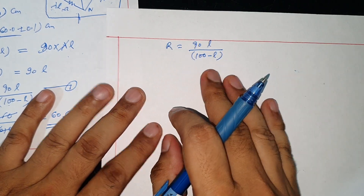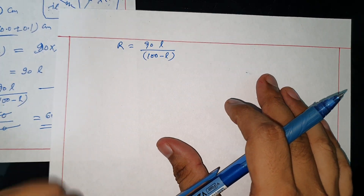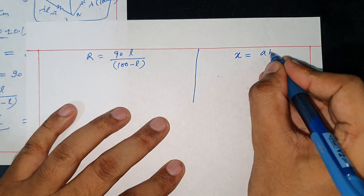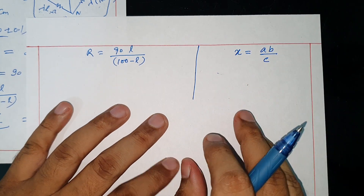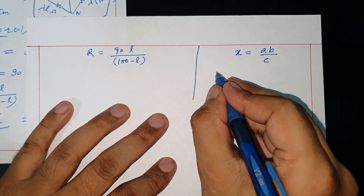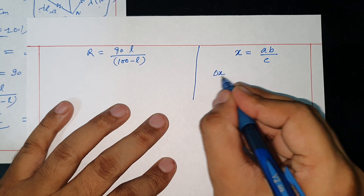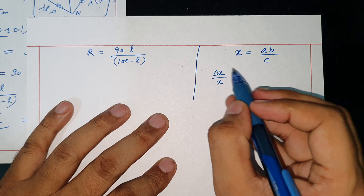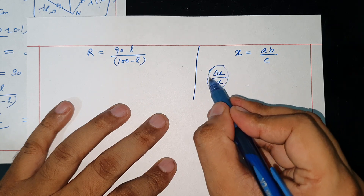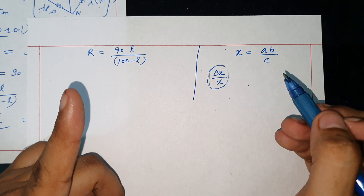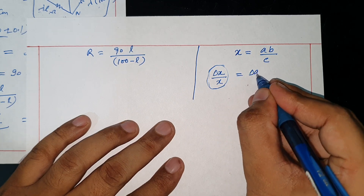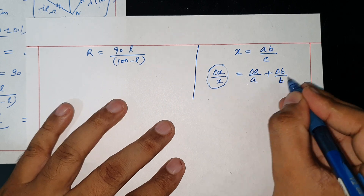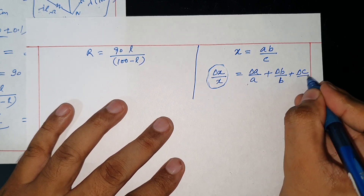You may also recall this from error of measurement: when x equals a times b over c, for multiplication and division, the maximum fractional error is delta x upon x equal to delta a over a plus delta b over b plus delta c over c.